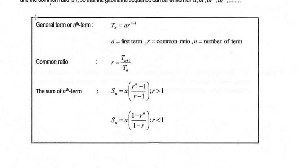The first formula in geometric sequence is to find the nth term: Tn equals A multiplied by R to the power of N minus 1. Tn is the nth term, A is the first term, R is the common ratio, and N is the number of terms. The second formula is to find the common ratio: R equals T(n+1) over Tn. The last formula is to find the sum of the first N terms. We apply Sn equals A times (R to the power N minus 1) over (R minus 1) when R is more than 1, and a different form when R is less than 1.